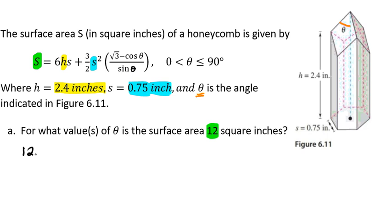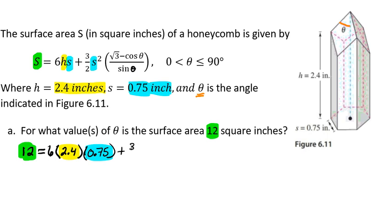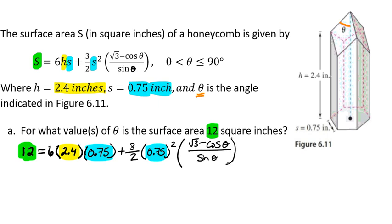We're going to plug in 12 into that spot. So we're going to have 12, because we're plugging that into our S spot, equals 6 times our H which is 2.4, times our little s of 0.75, plus 3 halves of our little s quantity squared times the square root of 3 minus the cosine of theta divided by the sine of theta.